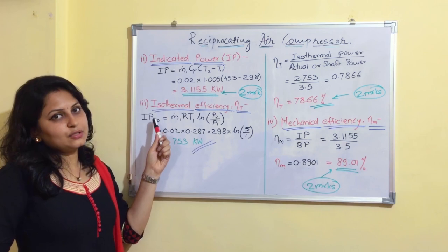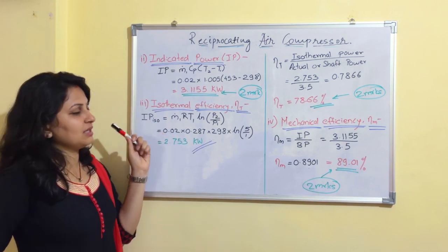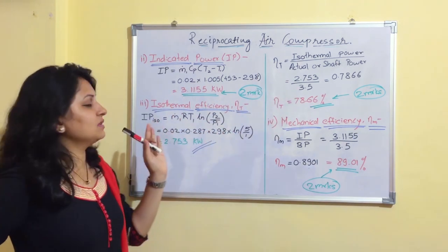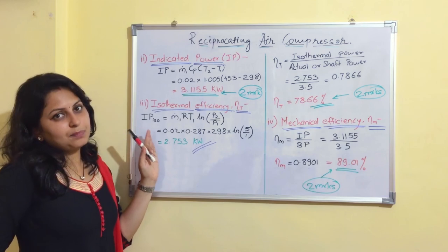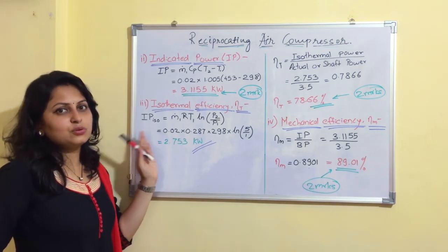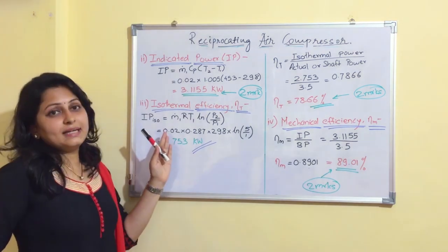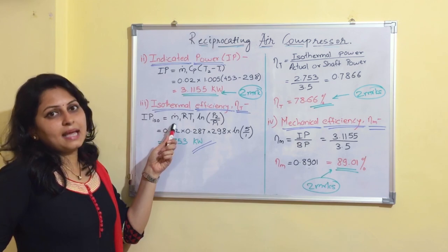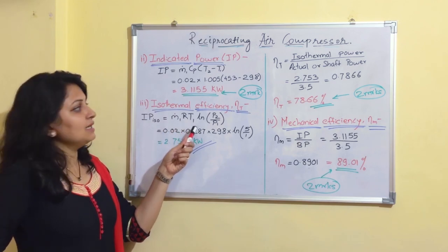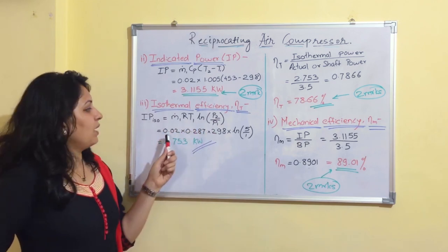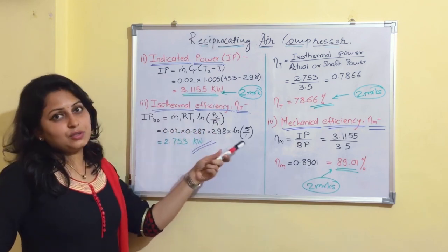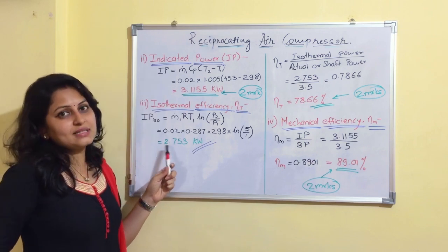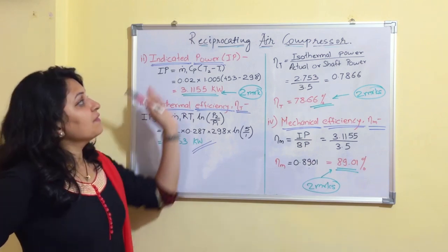The next point is isothermal efficiency. Before finding it, we need the indicated power for isothermal compression. The formula is ṁ·R·T·ln(P2/P1). Substituting all values, we get isothermal indicated power = 2.753 kW.